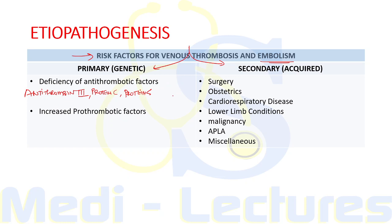Regarding etiopathogenesis, risk factors for venous thrombosis and embolism are divided into primary/genetic and secondary/acquired. Primary risk factors include deficiency of antithrombotic factors such as antithrombin 3, protein C, and protein S, or increased pro-thrombotic factors including Factor 5 Leiden or mutation of Factor 5.